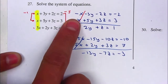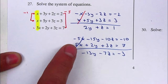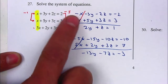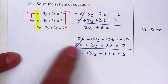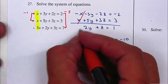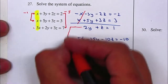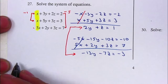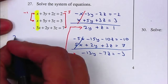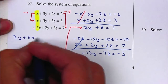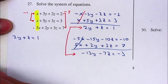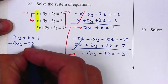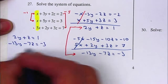Remember, if you cancel the X's the first time, you want to cancel the X's again — canceling the same variable twice — so now we have two equations that have only Y's and Z's and we can combine them. We have 2Y plus Z equals one, and negative 13Y minus 7Z equals negative three.